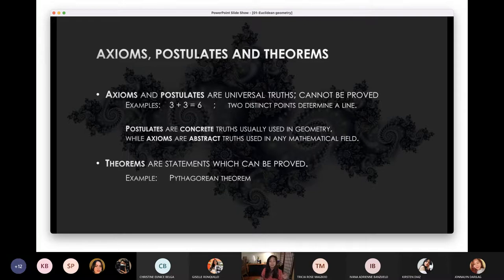Now let's go to axiom, postulate, and theorems. So what is the difference between an axiom, postulate, and a theorem? An axiom and postulates are called the universal truth. They cannot be proved, but they are true. We cannot prove that, but they're true. So we have what we call the axioms and postulates.